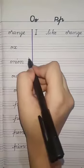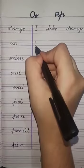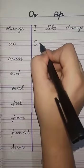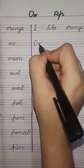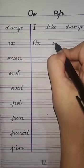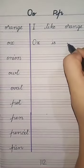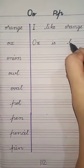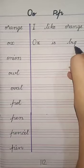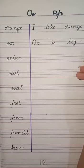Next is Ox. Ox call bell. Hum write karenge: Ox is big. First you write capital O and X into middle line. Write one finger gap, then 'is'. Ox is big. B-I-G, big. Ox is big - bell bada hai. And last, full stop.